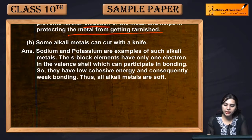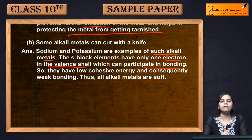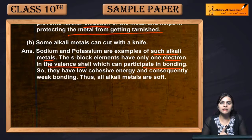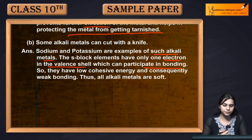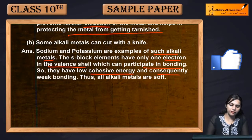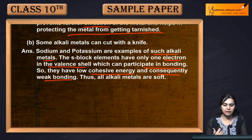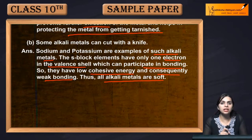Sodium and potassium are examples of such alkali metals. The s-block elements have only one electron in the valence shell which can participate in bonding. In Group 1, there is only one valence electron participating in bonding, so they have low cohesive energy and consequently weak bonding. Thus, all alkali metals are soft.